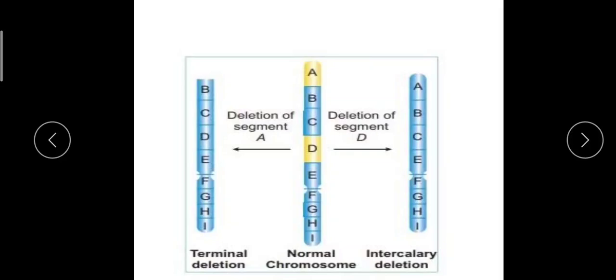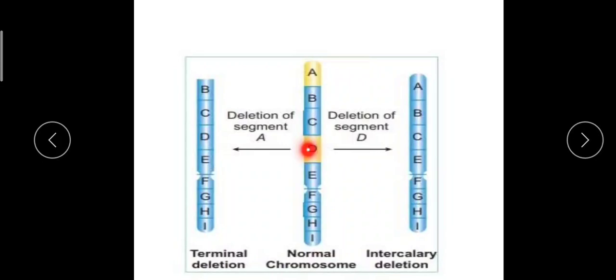During meiotic pairing of homologous chromosomes, those with heterozygous deletions characteristically involve the formation of an unpaired loop or bulge in the normal chromosome. When the deleted chromosome pairs with its normal homologous partner during meiosis, each segment pairs with its corresponding segment — 'a' with 'a', 'b' with 'b', 'c' with 'c', and so on.